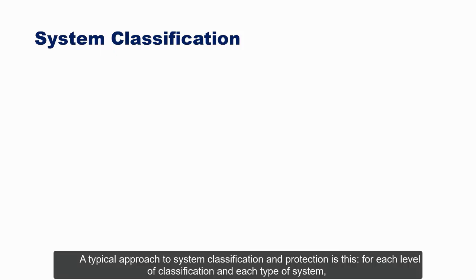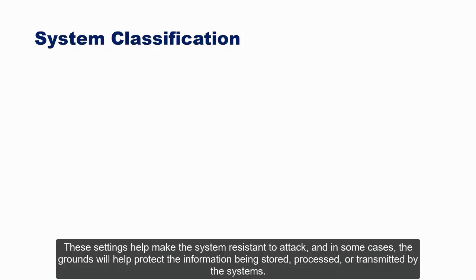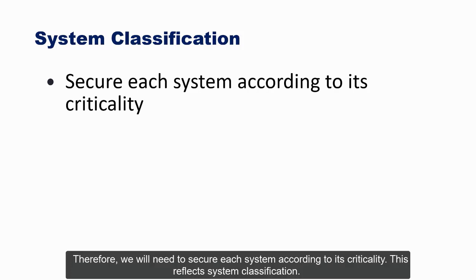System classification identifies and categorizes system assets according to the classification of information stored, processed, or transmitted by them, so that an appropriate level of protection can be determined and implemented. For each level of classification and each type of system, a system hardening standard is developed that specifies the features and configuration settings to be applied. These settings help make the system resistant to attack and protect the information being stored, processed, or transmitted.